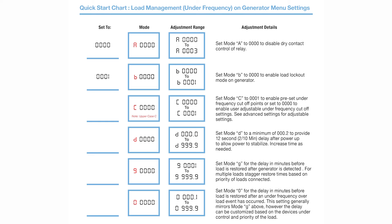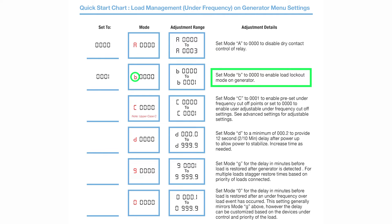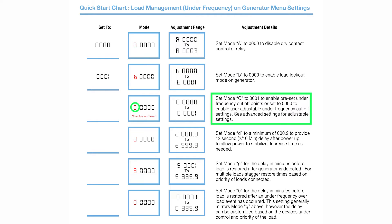Turning to the Load Management Quick Start chart, we see that we only need to adjust a total of six menus, and we can scroll past and ignore any menus not shown on this page. Menu A should be set to 0 to disable dry contact control of the relay. Menu B should be set to 1 to enable load management on generator power. Menu C should be set to 1 to enable factory presets for under-frequency control.